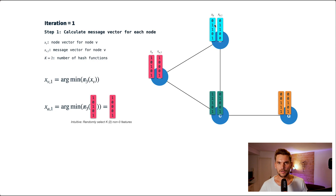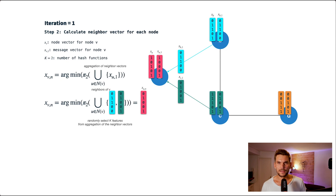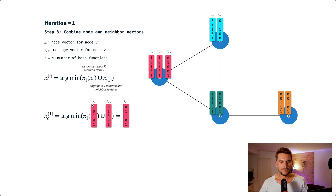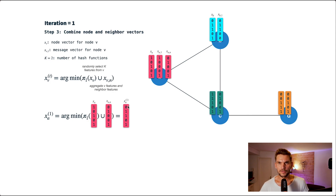This step happens on all nodes in the graph. In step two, the generated message vectors are passed along the edges to all neighbors. For node a, we receive the green and blue vectors from neighbors, combine them using a sum, then apply hashing scheme two (relating to u2) to get the combined neighboring message vector. In step three, hashing scheme one replaces neural network one — it min-hashes the node's own feature vector, then combines it with the neighboring vector. The result is the output for each node in iteration one, which becomes the input for the next iteration.